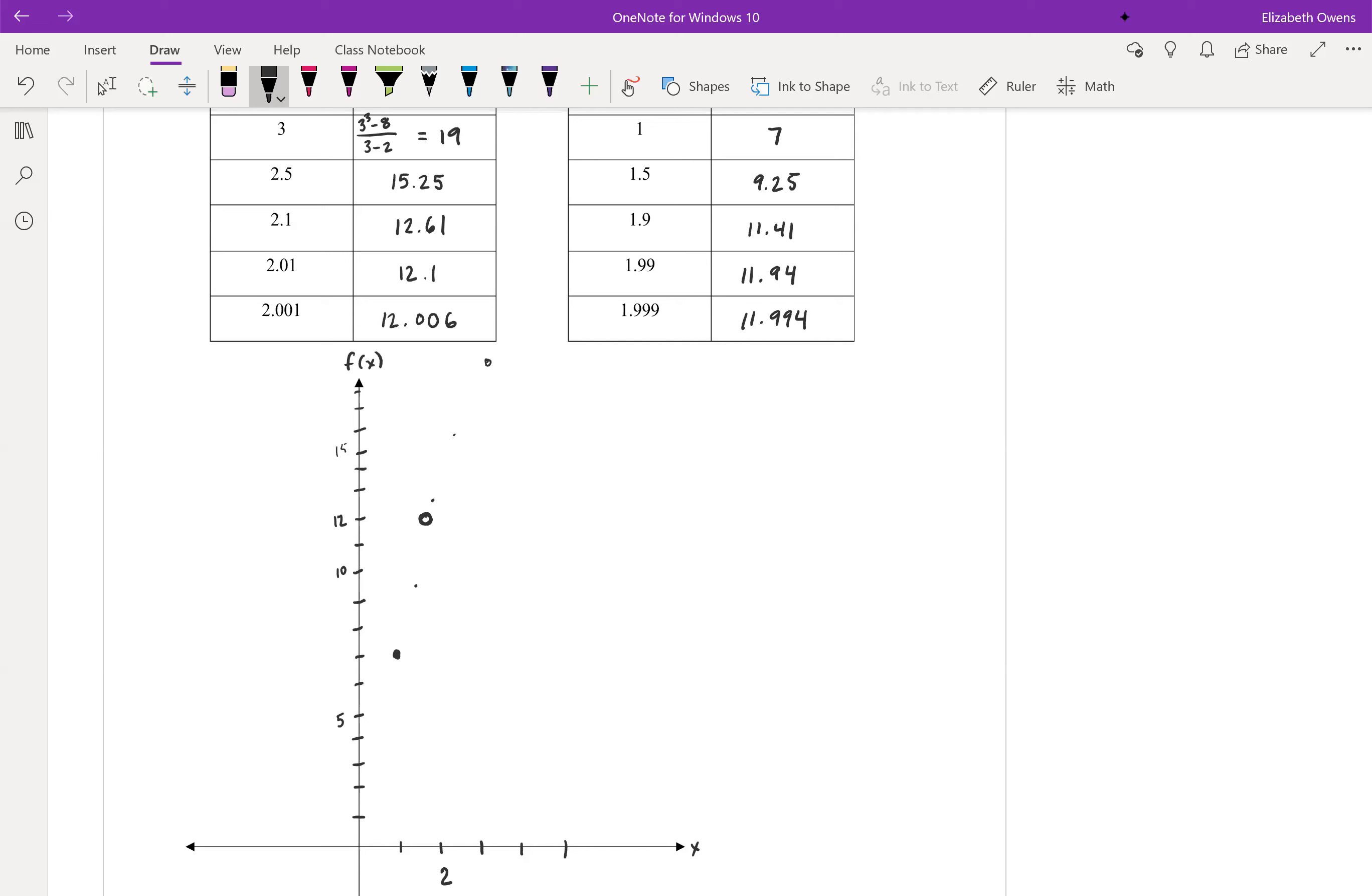Okay. Now if you were to fill in the rest of this graph, it turns out that it's just a parabola type shape. Something like this. Okay. It's a parabola with a hole in it.